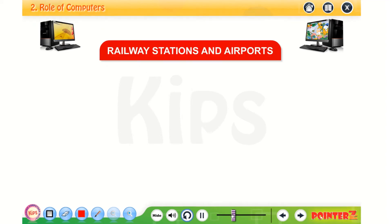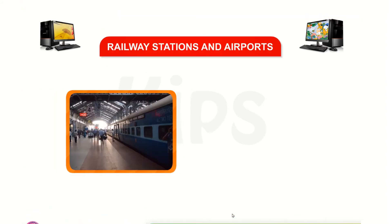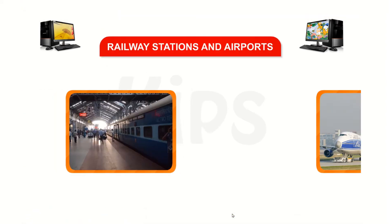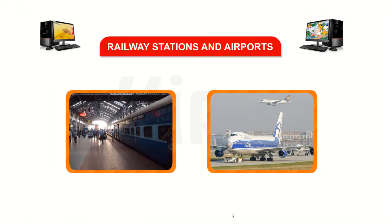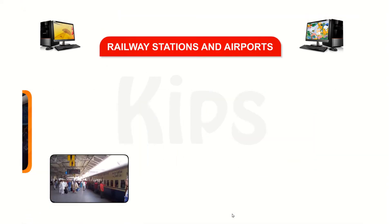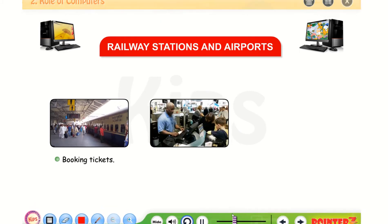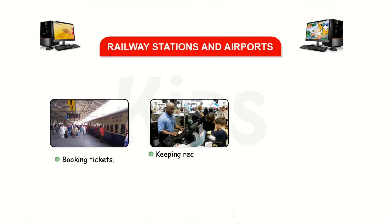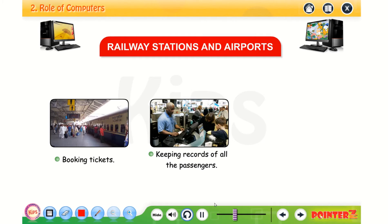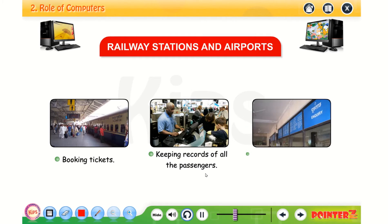At railway stations and airports, we use computers for booking tickets, keeping records of all the passengers, and giving information about the arrival and departure timings.